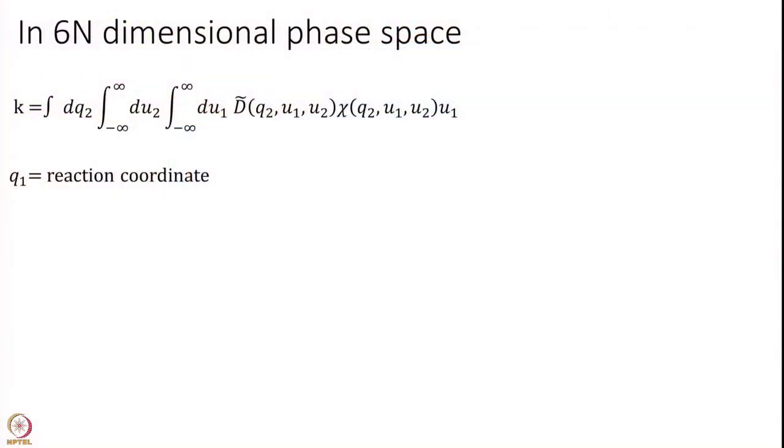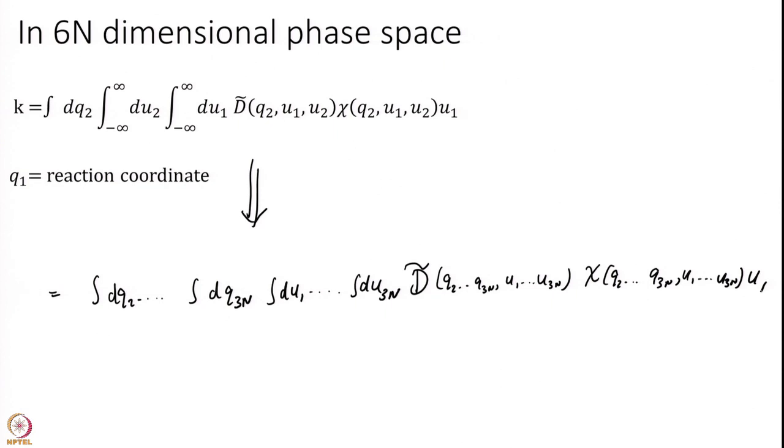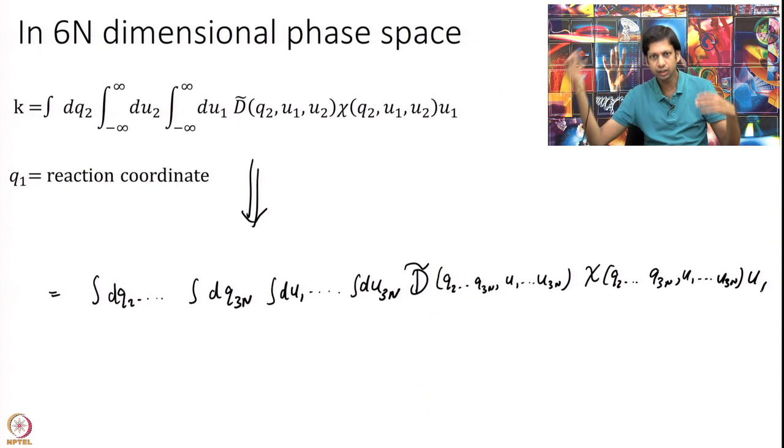In short this is the formula I had in 2d. I take this formula and I generalize it. I integrate from d q2 to d q3 n and I integrate over all speeds d tilde of q2 to q3 n u1 to u3 n chi q2 to q3 n u1 to u3 n into u1. It is a straightforward generalization earlier I for example I showed you how it works in q2 space only because it is easier to see but really it is q2 to q3 n and all speeds.